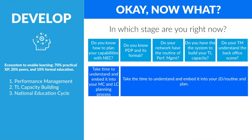Depending on what you answered, some action items you can take are: take the time to understand the national education cycle and embed it into your MC and LC planning process. National education cycles can take a lot of time, energy, resources, and synergy from an MC and LC team — if it's not done purposely it won't be quality or effective. For the other questions, make sure these things are embedded into the JD and the routine of your MCBTM and into the plan of your entity.